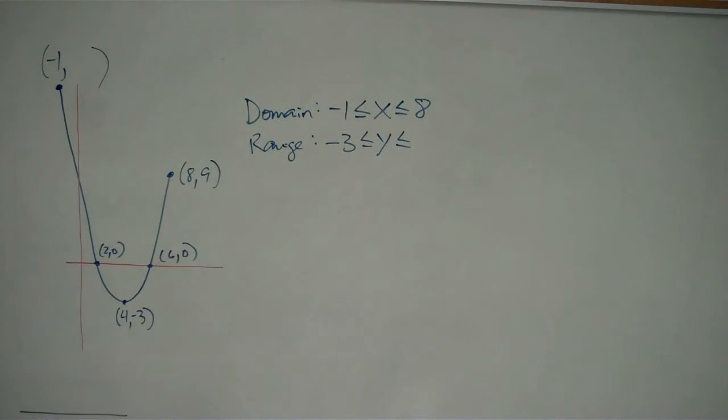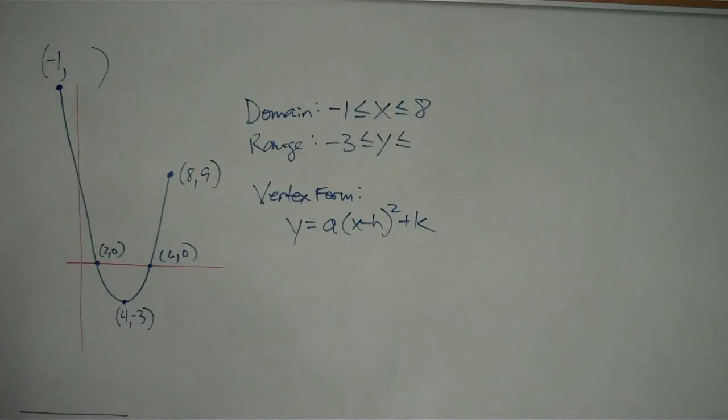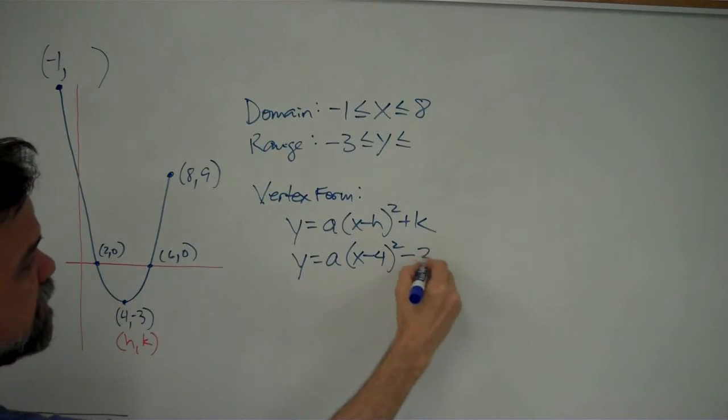So let's see what I can do. Let's start with vertex form. Vertex form is y equals a times x minus h squared plus k. Now, fortunately, I'm two-thirds of the way done already because I know the vertex. It's the point 4, negative 3. And that point happens to be the point h, k. So that means I can say, y equals a times x minus 4 squared minus 3.